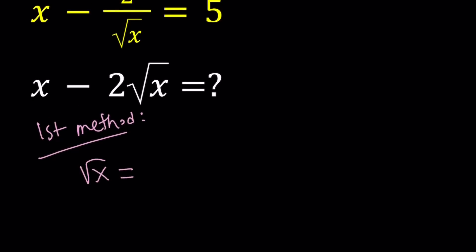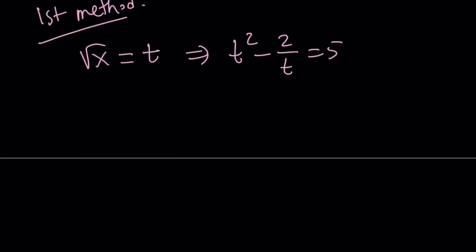Let's set square root of x equal to t. And then from here we get the following t squared minus 2 over t equals 5. And if you multiply both sides by t, t cubed minus 2 equals 5t.